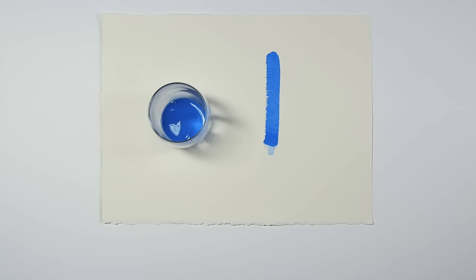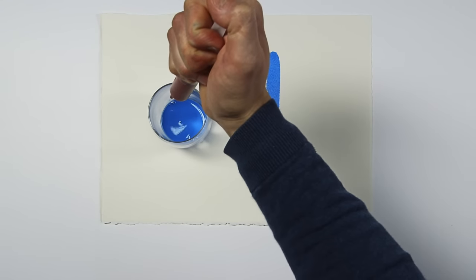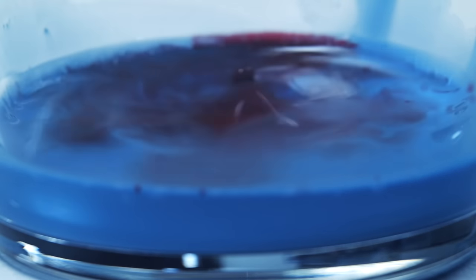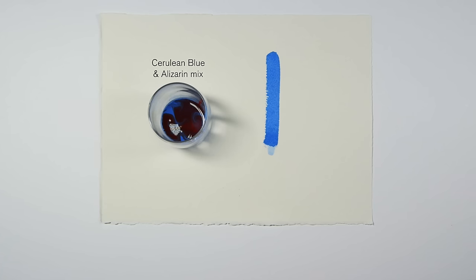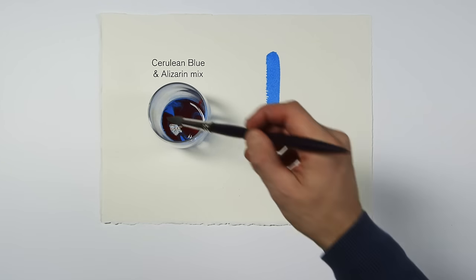The second wash is dominated by cerulean blue. It's a lovely granular color to use wet on wet. I've added some alizarin crimson to make it into a light purple, so roughly 80% cerulean and 20% alizarin.